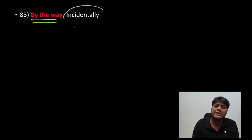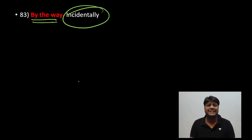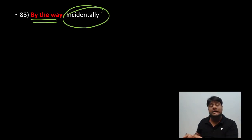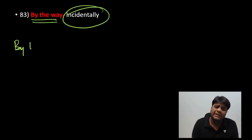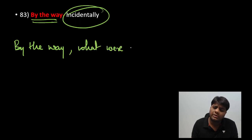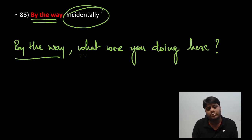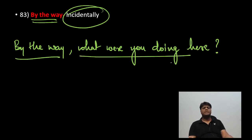Next: 'by the way.' This is used when something happens incidentally — not intentionally. For example: 'By the way, what were you doing here?' — meaning you came across something or someone unintentionally, and you ask casually.